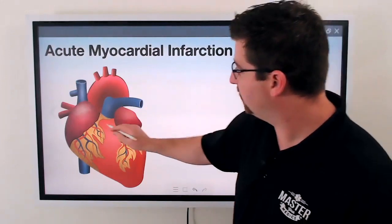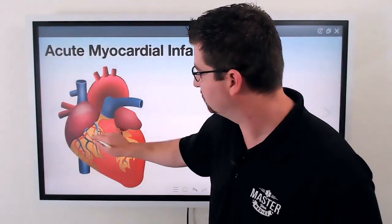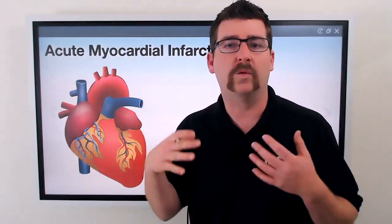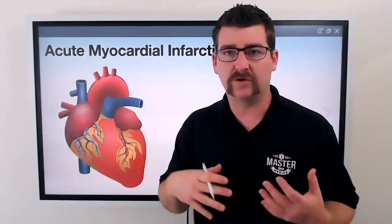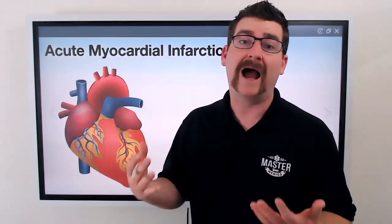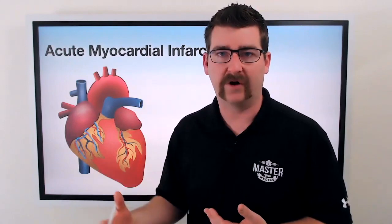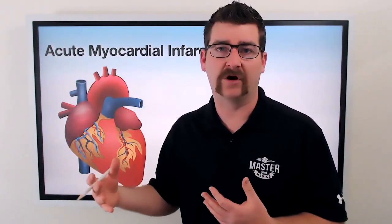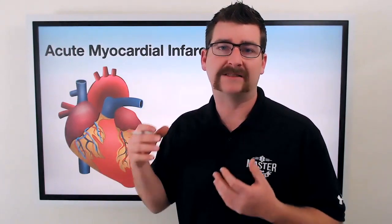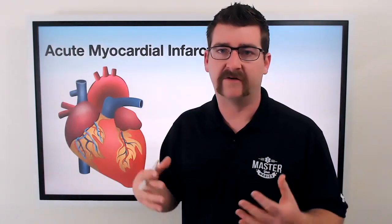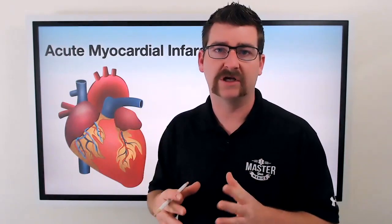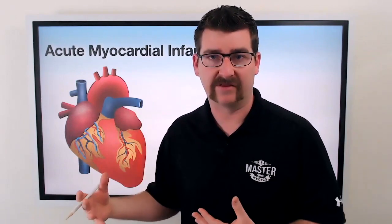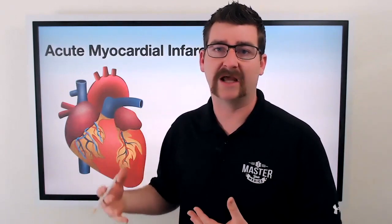We have all of these different vessels that are going down the sides of the heart, and depending on which vessel is occluded is what kind of acute myocardial infarction we have. An acute myocardial infarction means it's a sudden onset of this narrowing, this blockage — anything like that that's actually causing this tissue death.